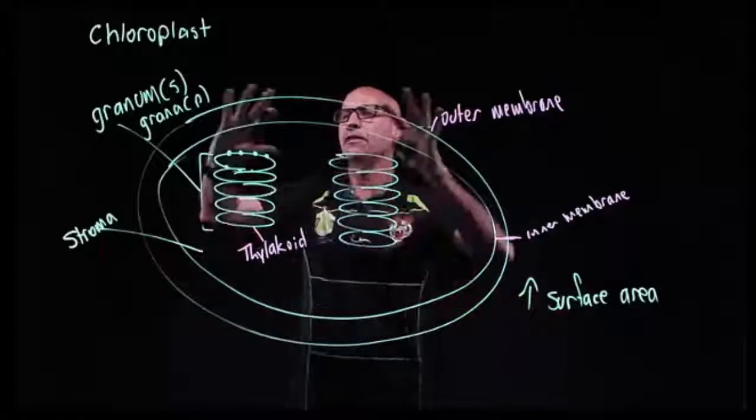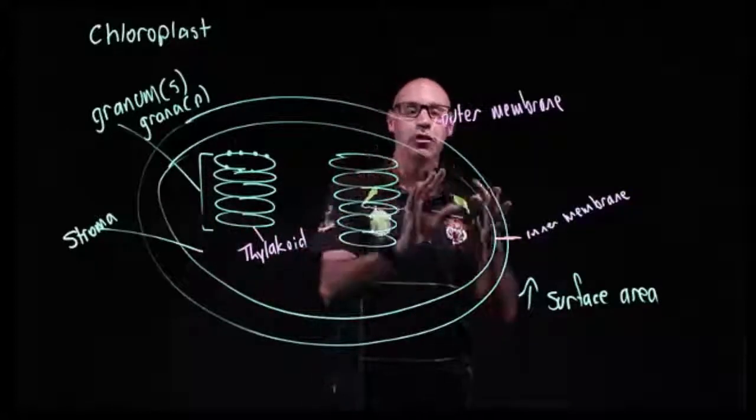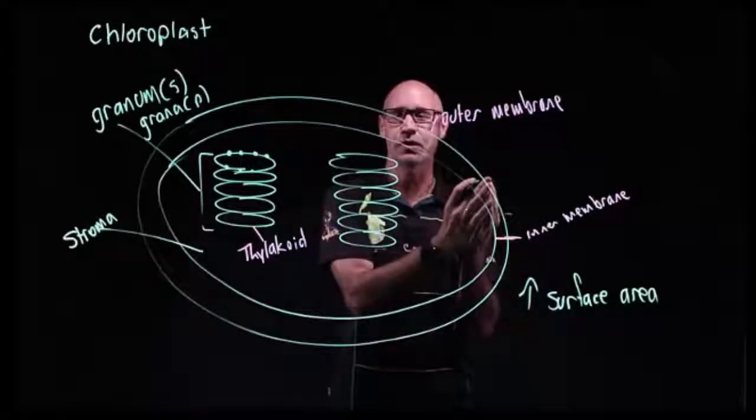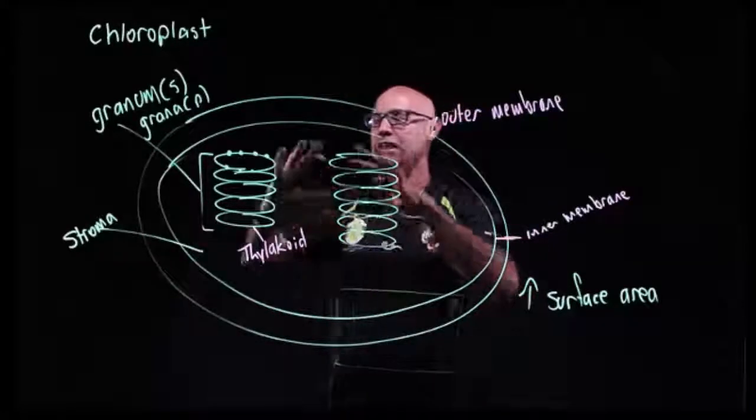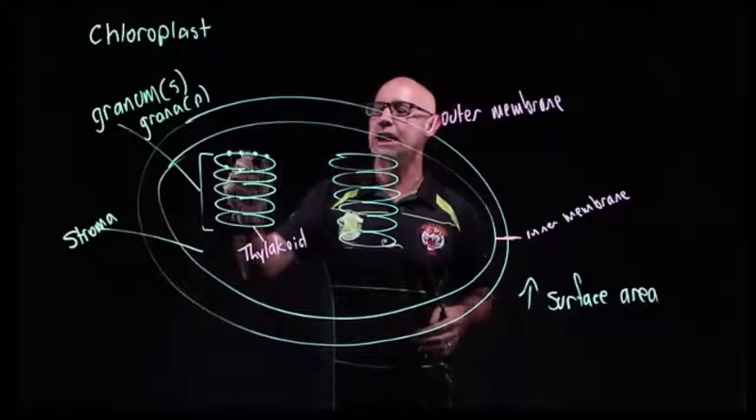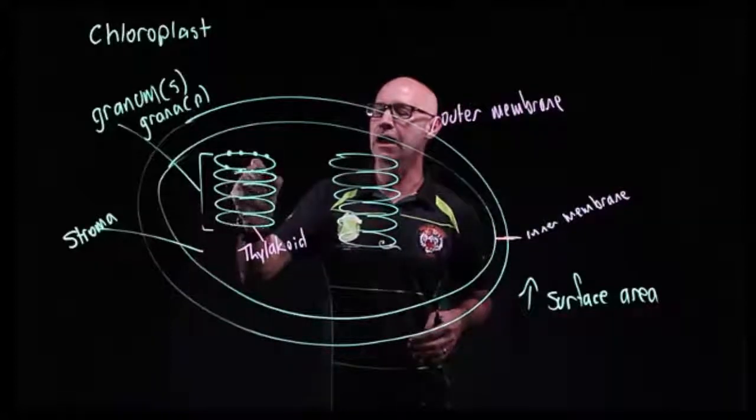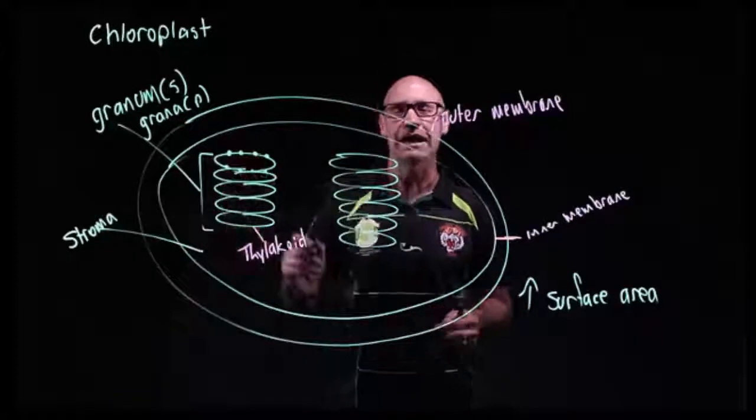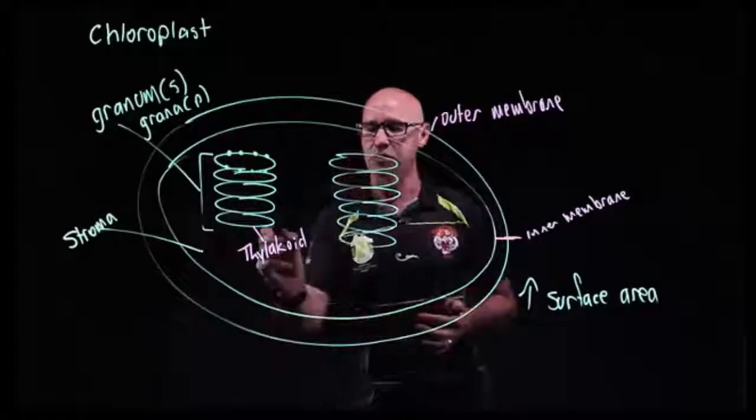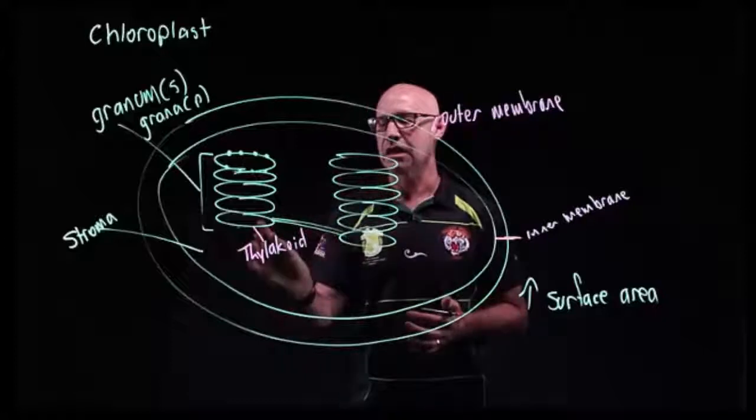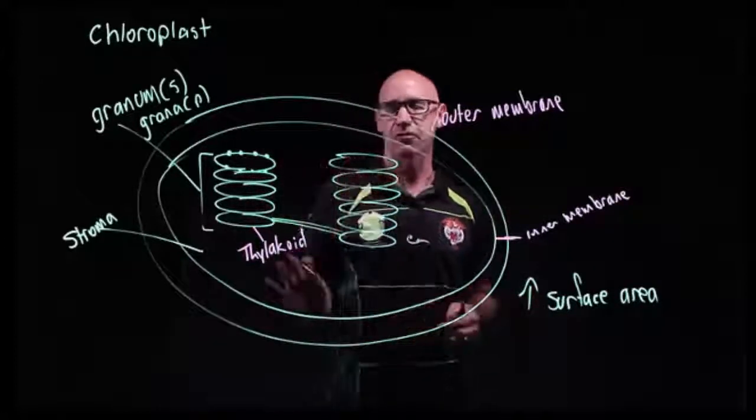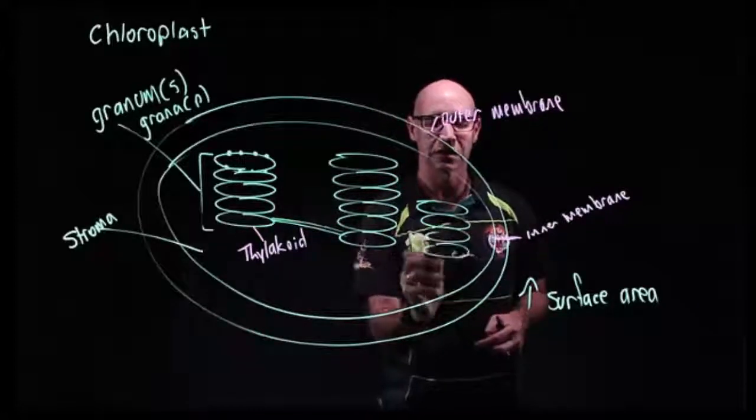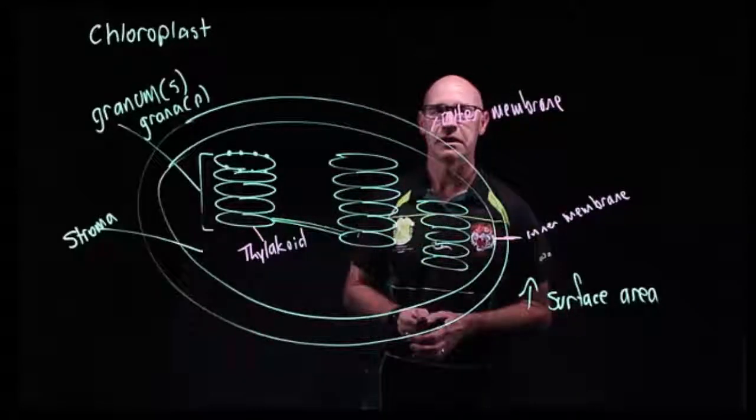So we find our chloroplasts are mostly concentrated in our palisade mesophyll, and in these chloroplasts we've got a large amount of chlorophyll and other pigments to capture the light energy. There is also communication between each of these granum as well, and there's a whole series of these in the chloroplasts.